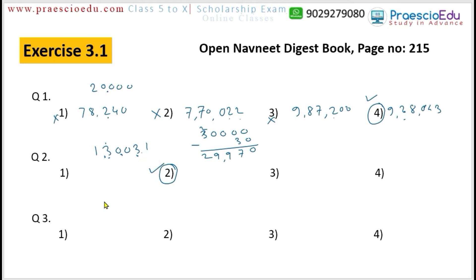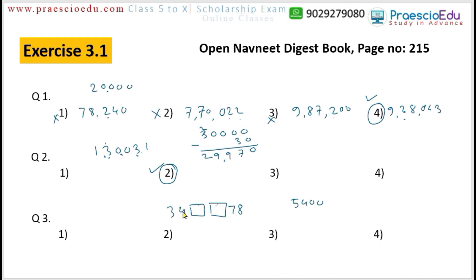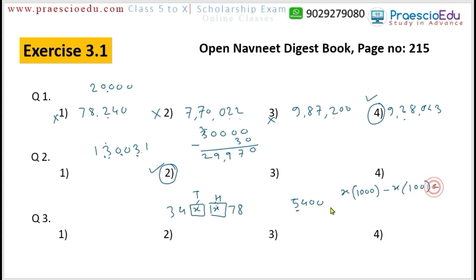Question 3: The same digit occurs in two boxes in the number 3,4□1□78. The difference in the place values of these two digits is 5,400. We need to find which digit replaces the boxes. The first box is at the thousands place and the second at the hundreds place. Let's assume the unknown digit as X. The equation becomes: X × 1000 minus X × 100 = 5400.